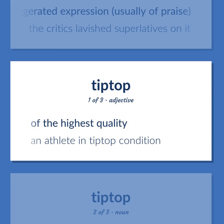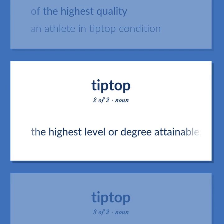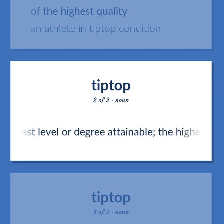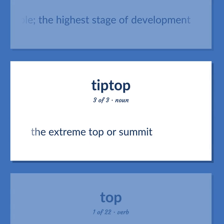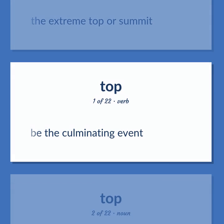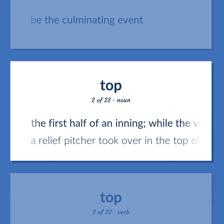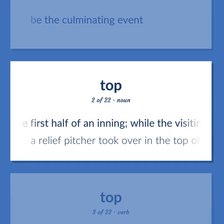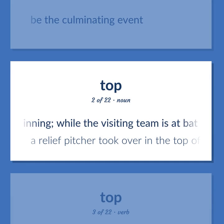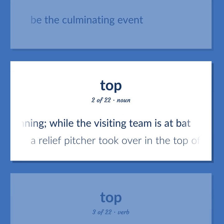Top. Of the highest quality. Example: An athlete in tip-top condition. The highest level or degree attainable; the highest stage of development. The extreme top or summit. Be the culminating event. The first half of an inning while the visiting team is at bat. Example: A relief pitcher took over in the top of the fifth.